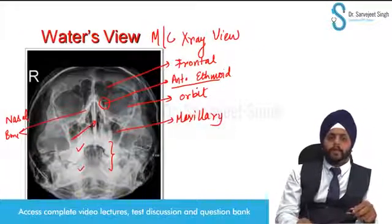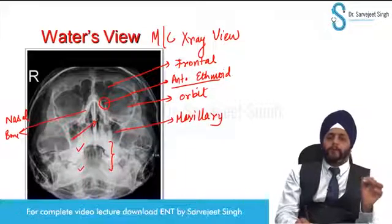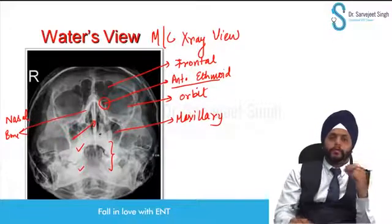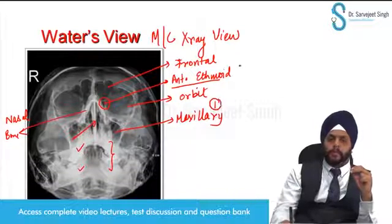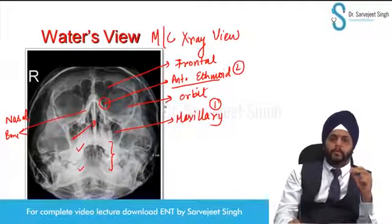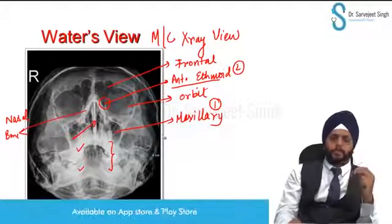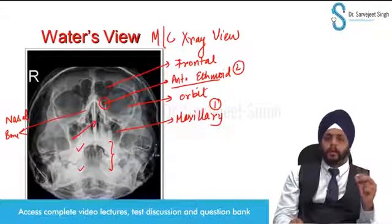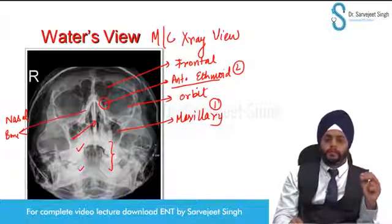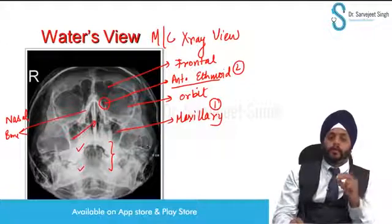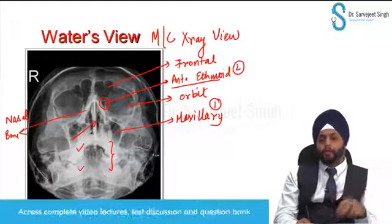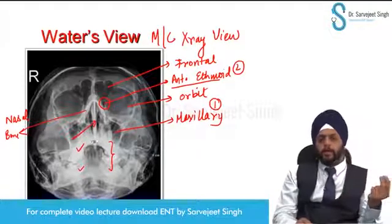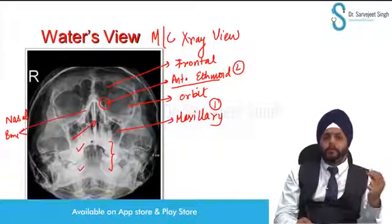Which sinuses are best seen in Water's view? Water's view is the best view for: number one, maxillary sinus; number two, anterior ethmoids. Which sinus is not visible in Water's view? The answer is posterior ethmoids. Posterior ethmoids are not visible in Water's view with a closed mouth or with an open mouth. Posterior ethmoid is the best answer; if not in the options, sphenoid can also be marked.